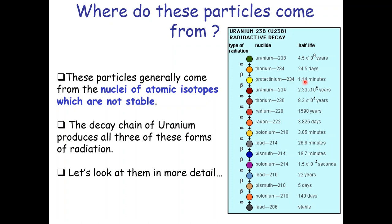Protactinium-234 again undergoes beta decay into uranium-234, which has a half-life of 2.33 × 10⁵ years. Uranium-234 then decays by alpha decay into thorium-230, which has a half-life of 8.3 × 10⁴ years. Thorium-230 undergoes another alpha decay to produce radium-226 with a half-life of 1,590 years, which then decays by alpha decay into radon-222 with a half-life of 3.825 days.